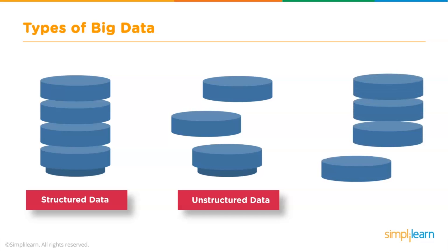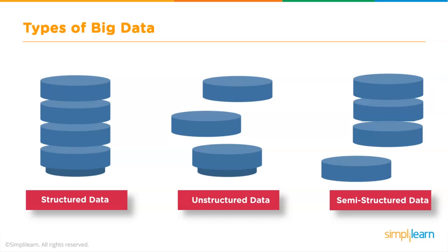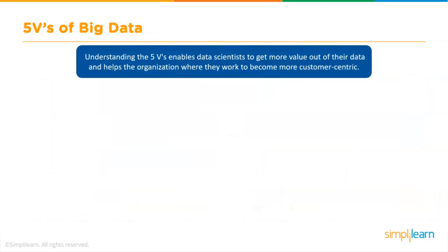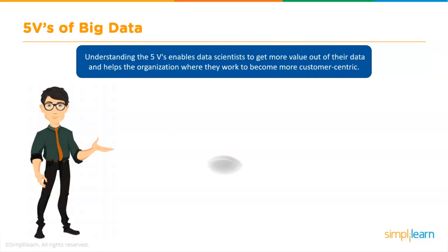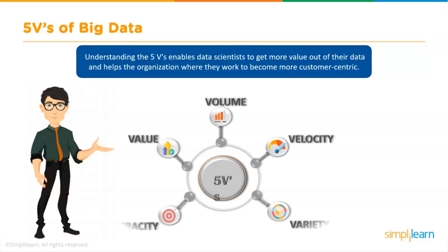Semi-structured data is a combination of structured and unstructured data. It includes organized text and data not formatted in conventional ways, with sources such as emails and other applications. Understanding the 5 V's concept plays a major role in working with Big Data. Knowing the 5 V's enables data scientists to get more value out of their data and helps the organization become more customer-centered.